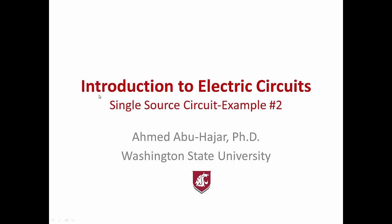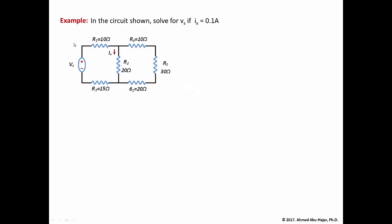Welcome folks to this new example where we're going to use a single source circuit. This is the second example that we are dealing with. In this particular circuit, it's a little bit different than the previous circuit from the technique's perspective. There is one element missing in values — we have a single source, but one element value is missing.